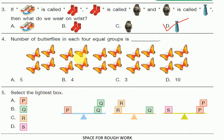Counting through: 3, 4, 5, 6, 7, 8, 9, 10. So 5 is the right answer. Question 5: Select the lightest box. You can see 3 patterns — P, Q, R, S.